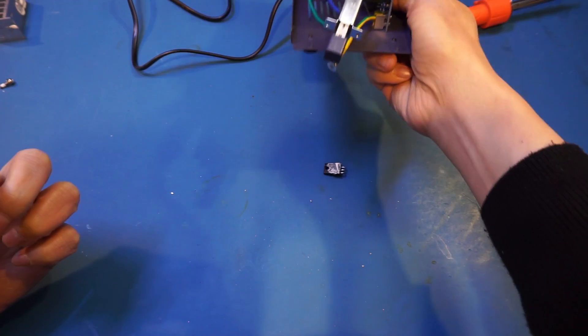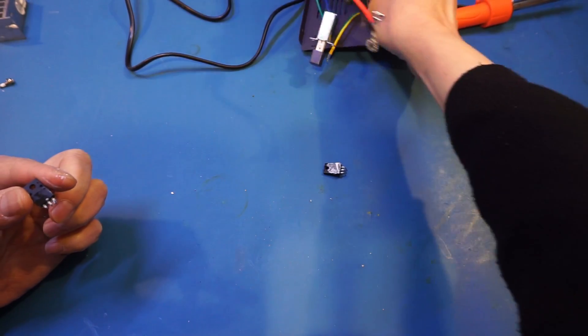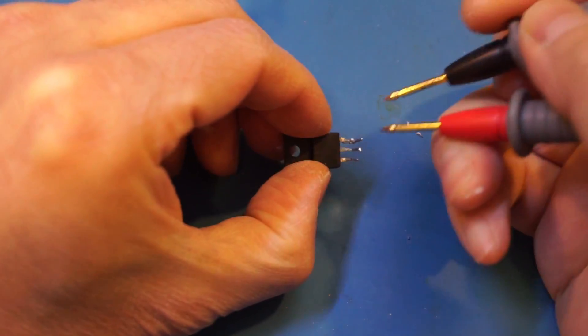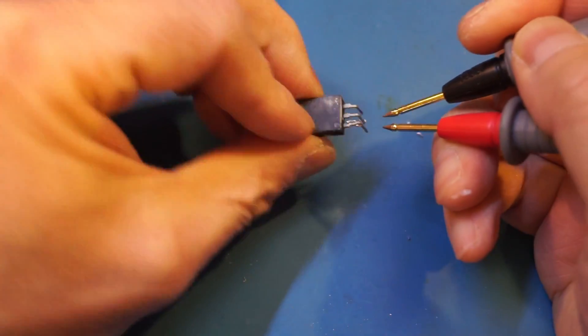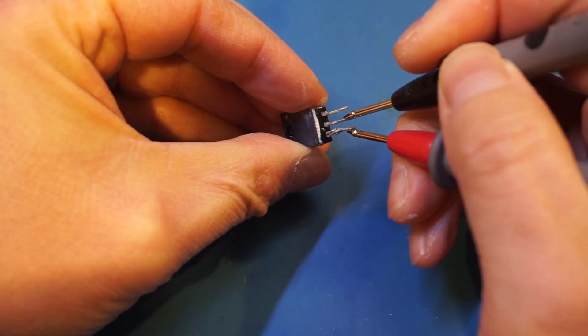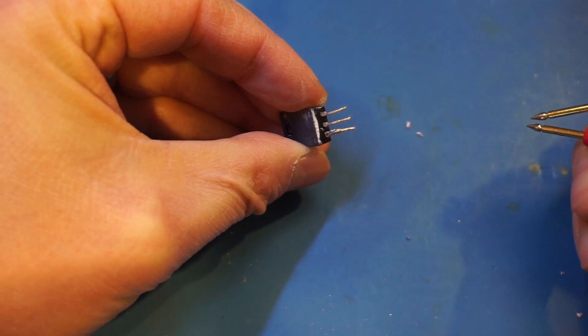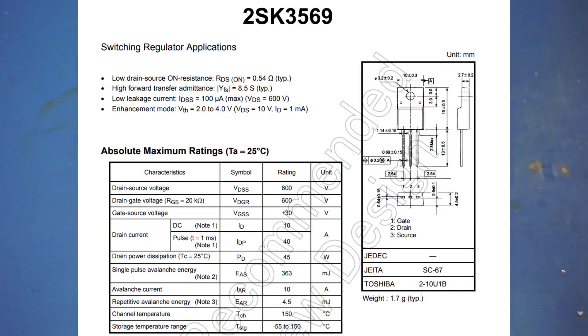Anyway, as you can see here, I was able to remove these two MOSFETs relatively easily. Yup, it's shorted. You probably can't see the part number, but these are 2SK3569s.